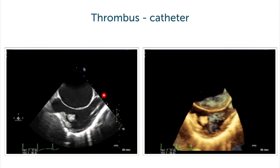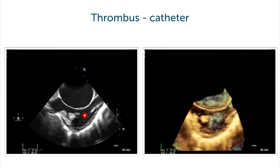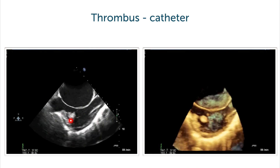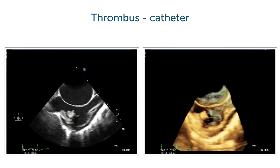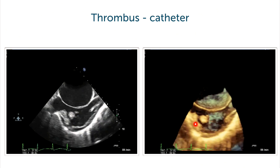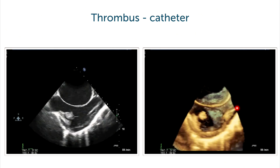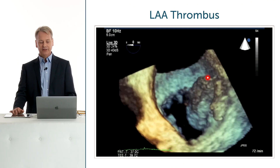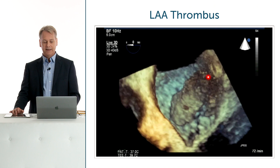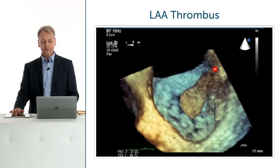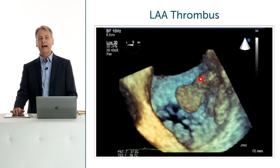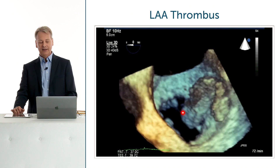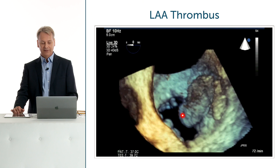A patient with a central line, a vegetation right here, again seen in 3D. And finally a patient who had a thrombus peeking out of the left atrial appendage, right towards the mitral valve.